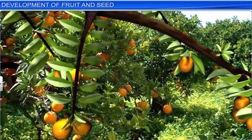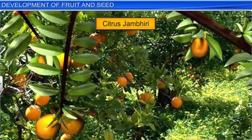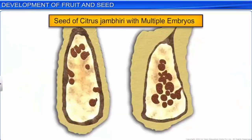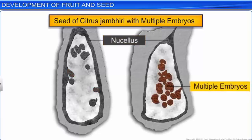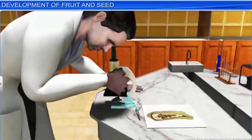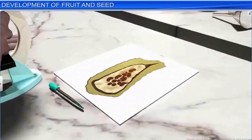Moreover, in certain apomicts such as Citrus jambhiri, which belongs to the Rosaceae family, the nucellus cells surrounding the embryo sac divide and protrude into the embryo sac. Later, these cells develop into embryos, and hence a single seed contains more than one embryo. This phenomenon of having more than one embryo in a seed is called polyembryony. Thus, though we have gained a lot of knowledge about the formation of seeds and fruit, there are many mysteries that scientists are still trying to unlock.